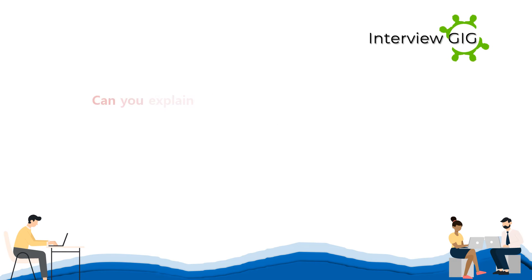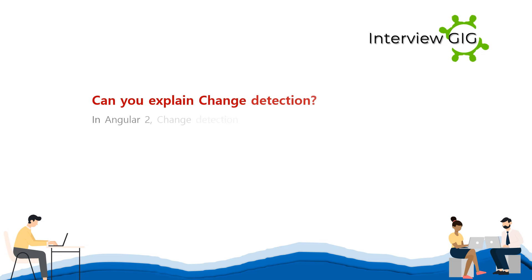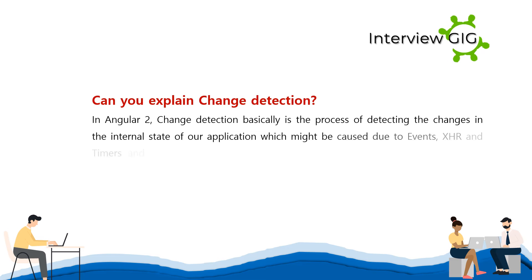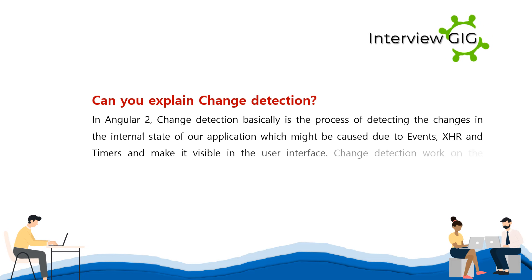Can you explain change detection? In Angular 2, change detection is basically the process of detecting the changes in the internal state of our application, which might be caused due to events, XHR, and timers, and making it visible in the user interface. Change detection works on the principle of zone.js in Angular.